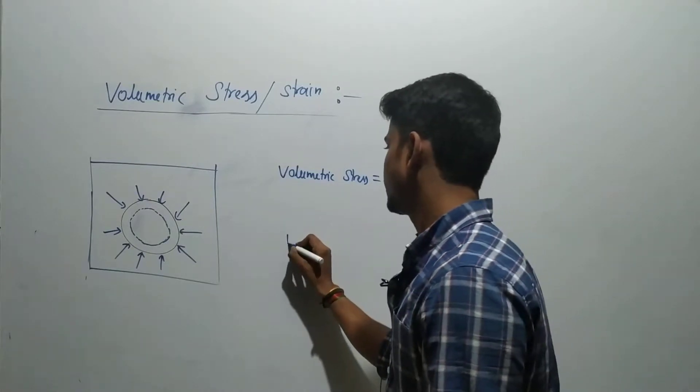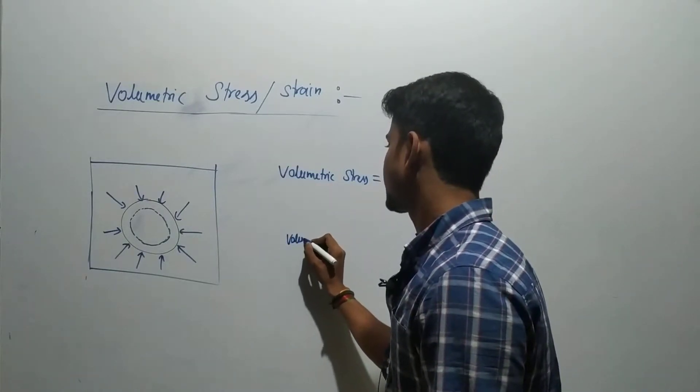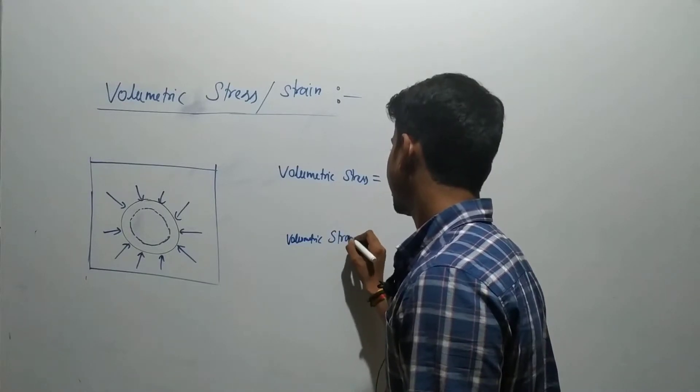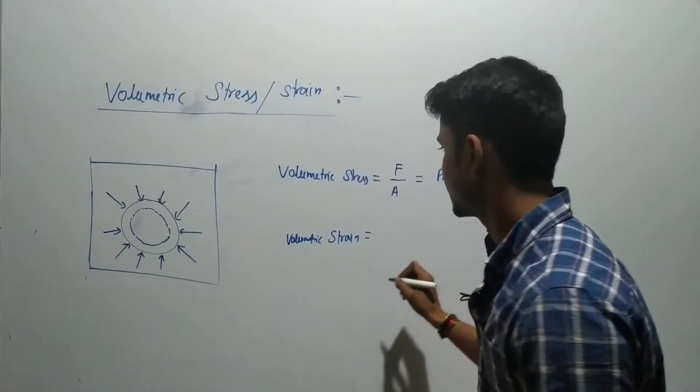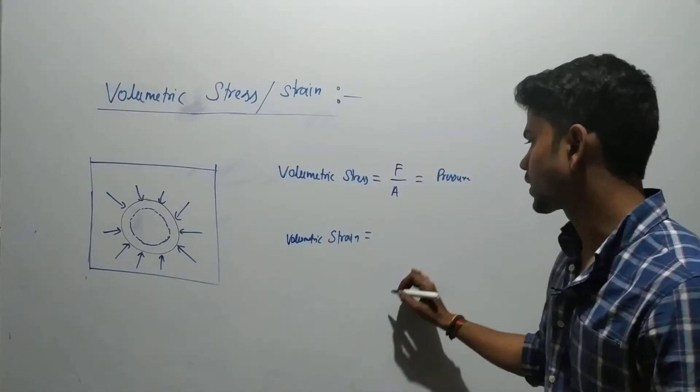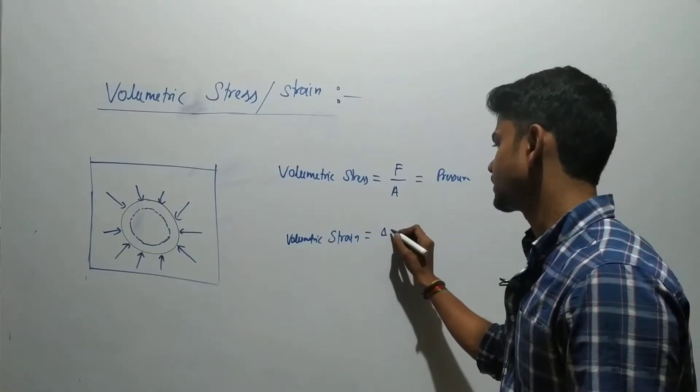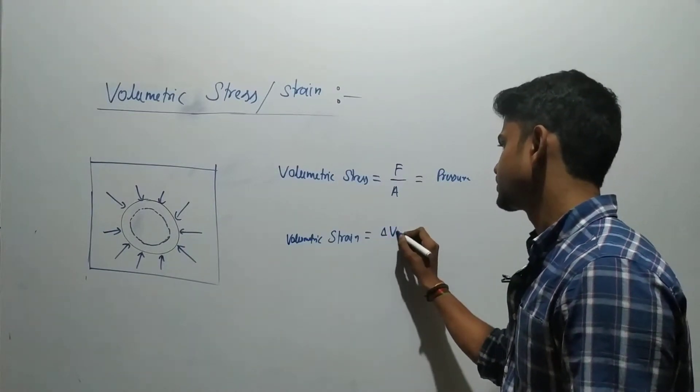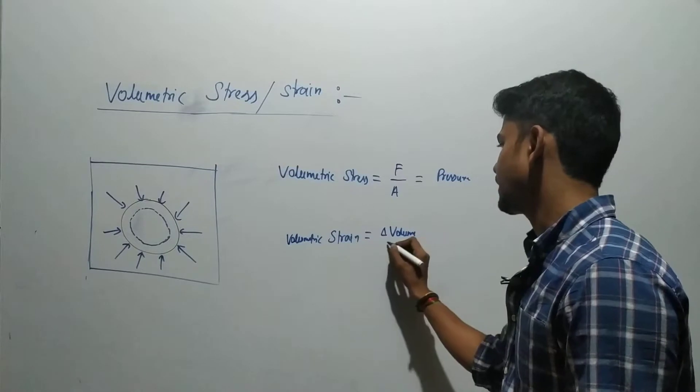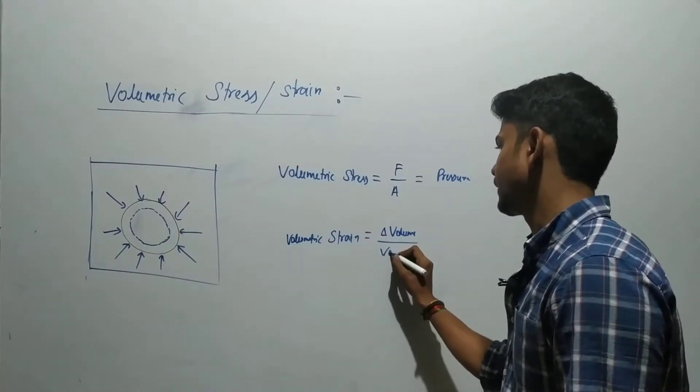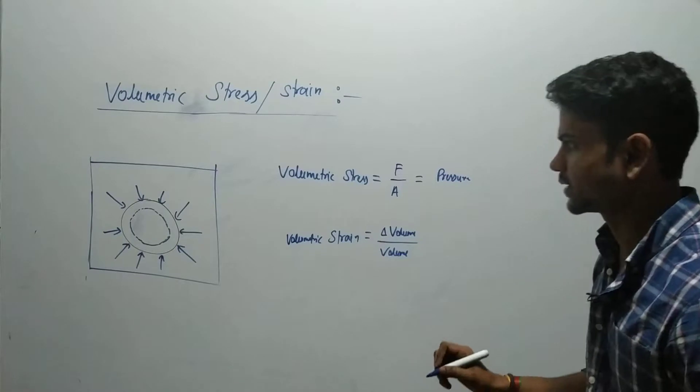a volumetric strain. So as with any strain, we will be talking about change in the dimension. This time we are talking about volume. So change in the volume by the original volume - that's your volumetric strain.